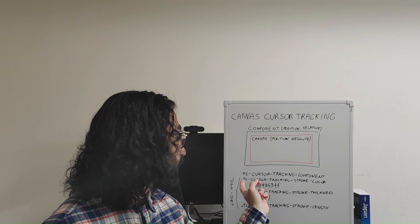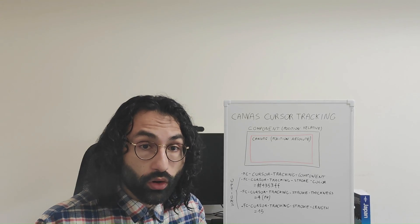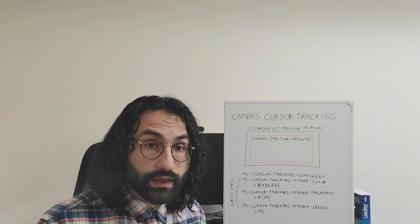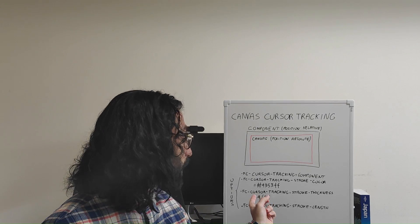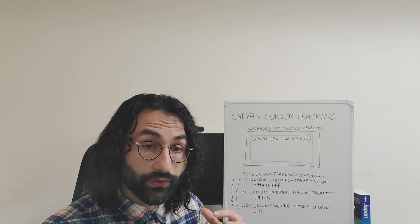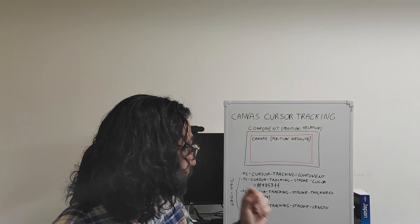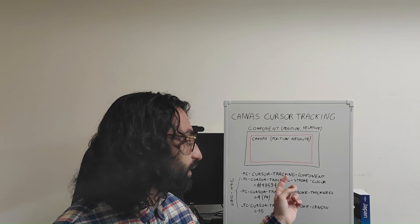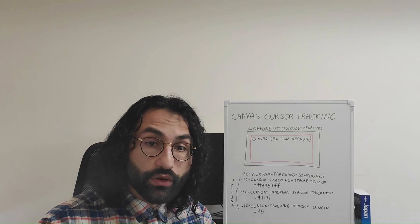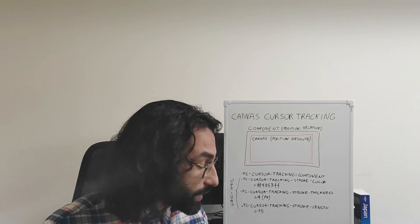Here we have the FC cursor tracking stroke color, which will allow us to specify a color for the stroke — the color needs to be expressed in hexadecimal format. Then we have the FC cursor tracking stroke thickness, which will allow us to specify the thickness in pixels for the stroke. And finally, we have the FC cursor tracking stroke length, which will allow us to specify the number of traits the stroke will be composed of.